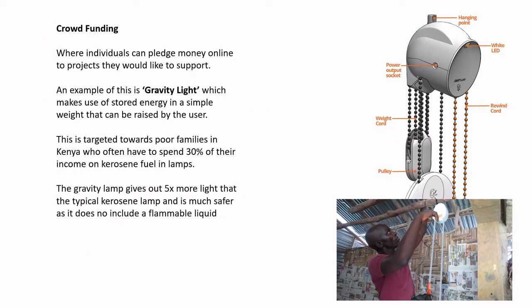Another example is the Gravity Light, crowdfunded for use in Kenya. You pull the light to the very top and as it slowly descends it charges the light. This replaced dangerous kerosene lamps which were causing a lot of house fires, since kerosene is a very flammable liquid. It's just a chargeable light on a cord.